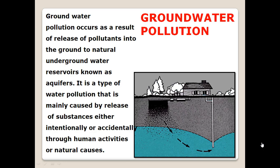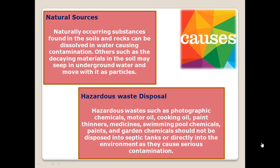Groundwater pollution occurs as a result of the release of pollutants into the ground, reaching natural underground water reservoirs known as aquifers. It is a type of water pollution mainly caused by the release of substances, either intentionally or accidentally, through human activities or natural causes.